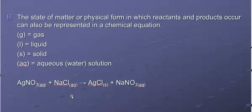We can indicate the state of matter for the reactants and products by putting a symbol after the compound. Gas is g, liquid L, solid s, and then aq stands for aqueous, anything dissolved in water would be aqueous.